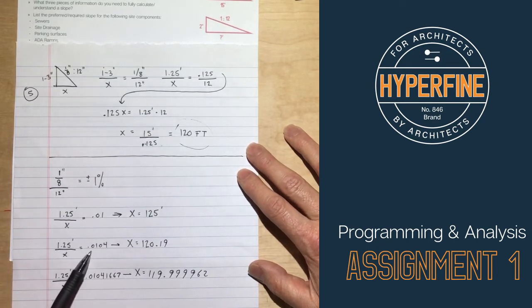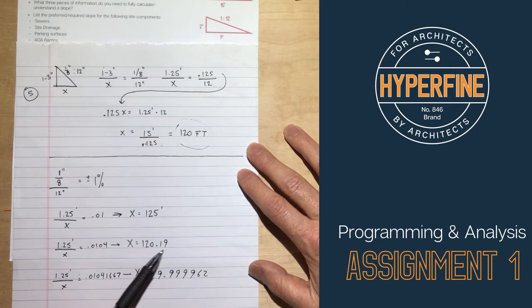So if we were a little bit more accurate and we said, okay, 1 eighth of an inch is actually closer to 0.0104, and we do the math, x works out to 120.19, and that rounds easily to 120.